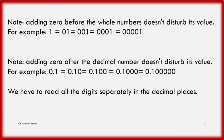Note: Adding zeros before a whole number doesn't change its value. For example, 1 equals 01 equals 001 equals 0001.